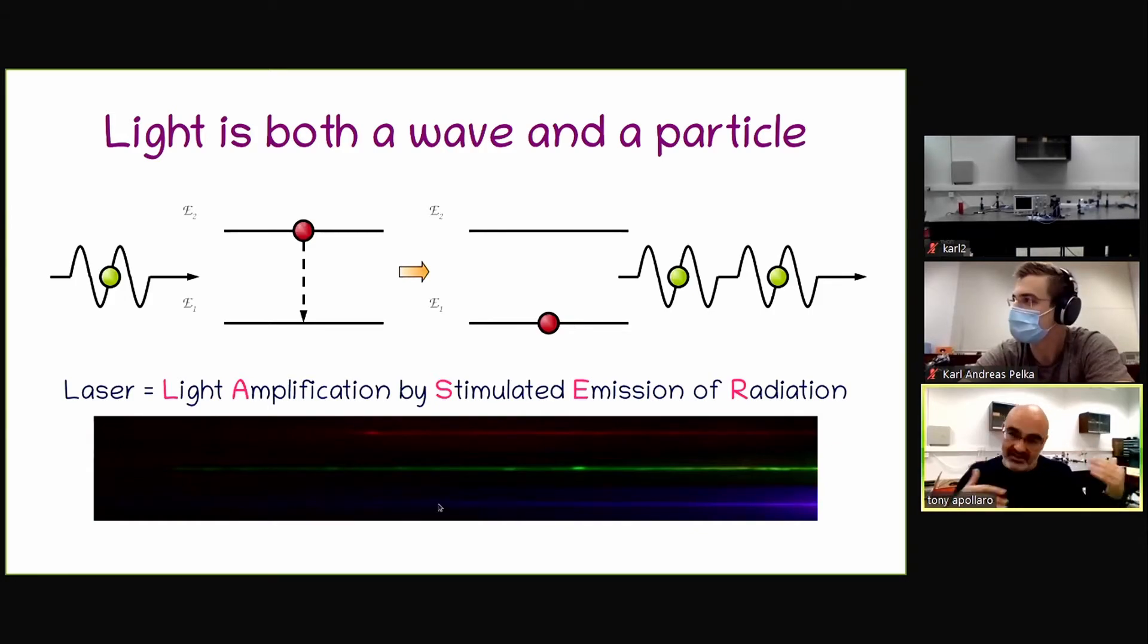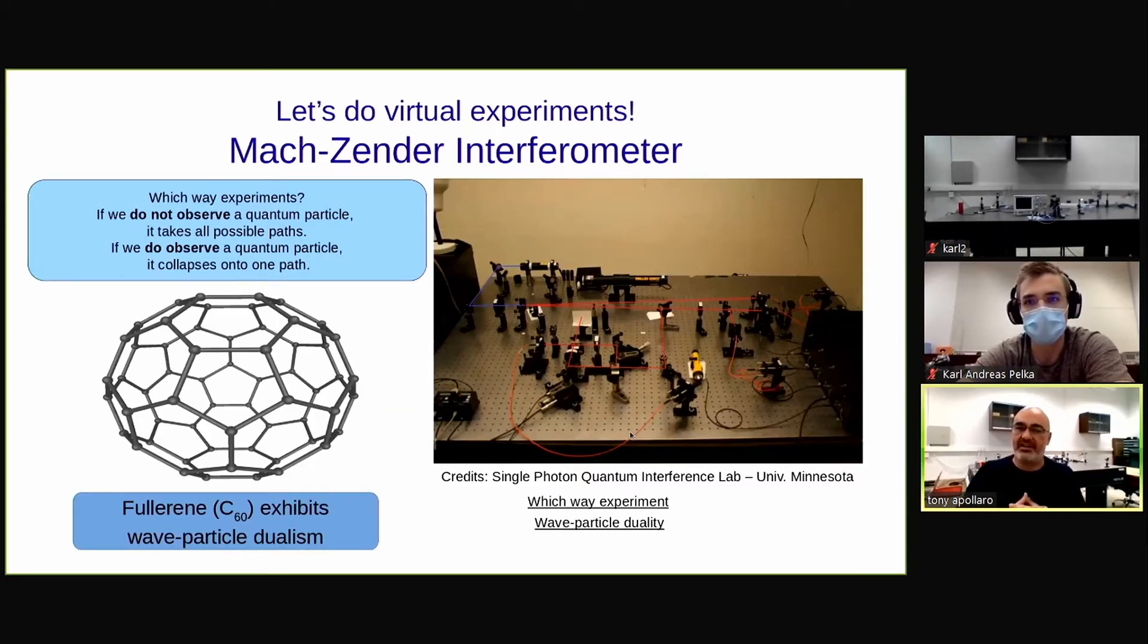Indeed, we will show the wave-particle duality with the instrumentation we have here behind us, with lasers. A laser is an acronym that stands for light amplification by stimulated emission of radiation. So basically, a laser works by gathering all the energy that is in the atoms and emits a light that is coherent, all with the same color. Now, in our case, we have a green and red laser. Let's show where do we see this wave-particle duality.